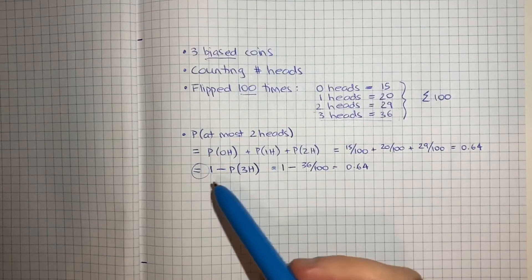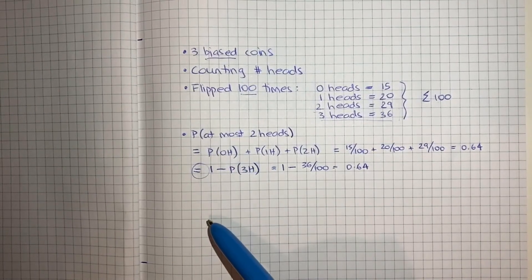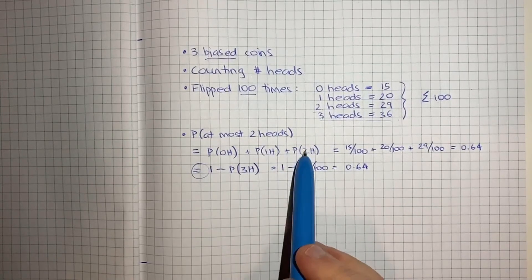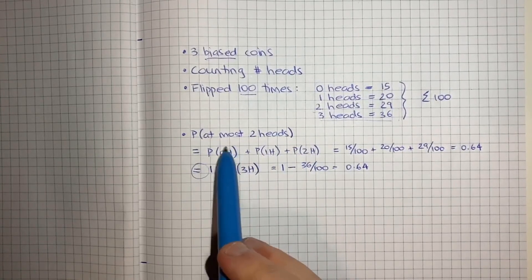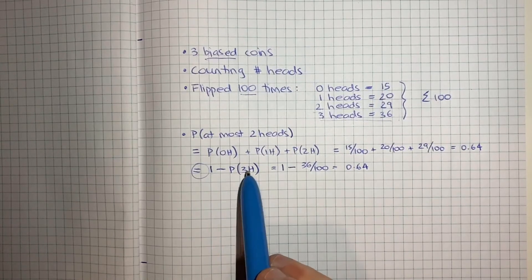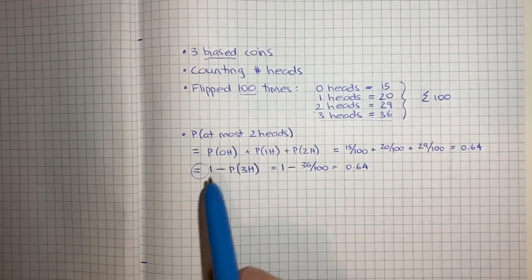So whenever you're grappling with these kinds of questions where it's at most something or at least something, you're typically going to have these two possible approaches where you can add up the probability of every possible outcome that meets your criteria, or you can do one minus the probability of every outcome that doesn't meet the criteria.